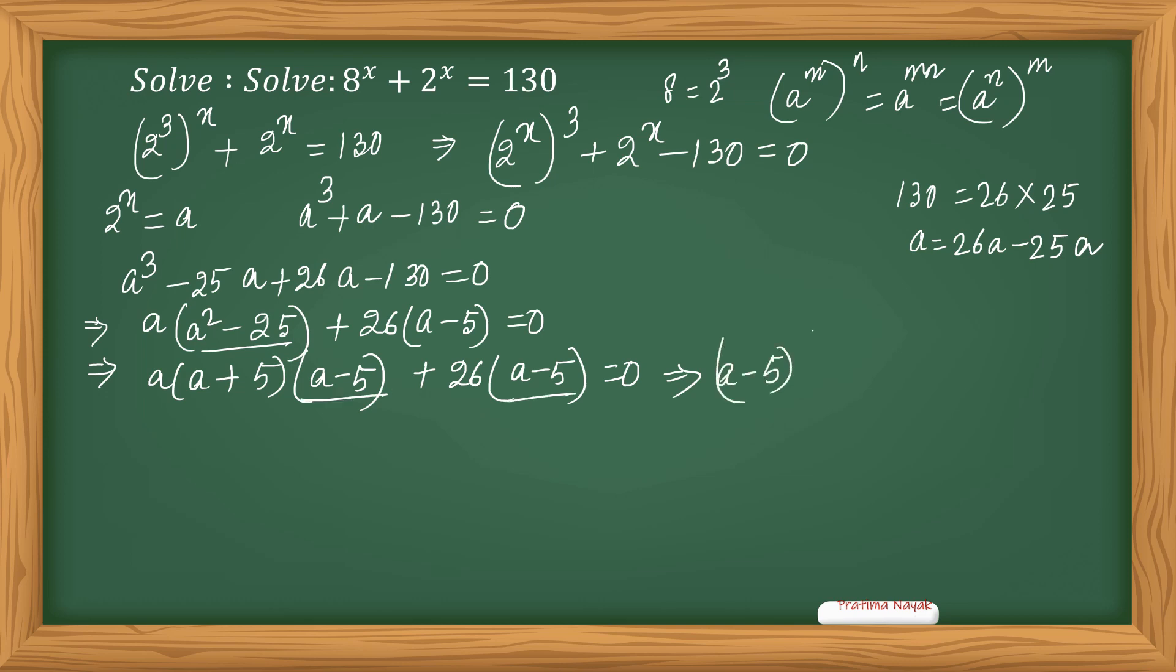What will remain is a squared plus 5a, and here it will be plus 26, equal to 0.